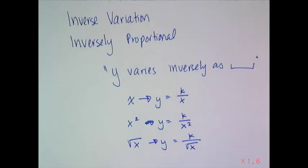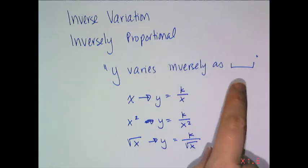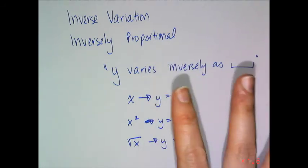Now let's look at what inverse variation really is. Not the limited algebra 1 version, but the real sciency language version of it. An inverse variation or an inversely proportional relationship can be expressed as y varies inversely as or y is inversely proportional to. And once again, like direct, it can be anything.